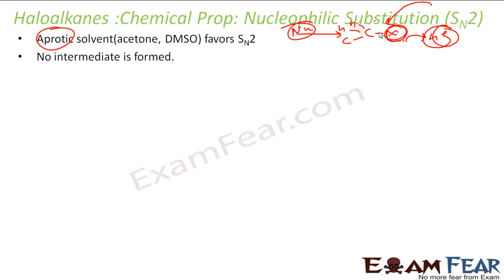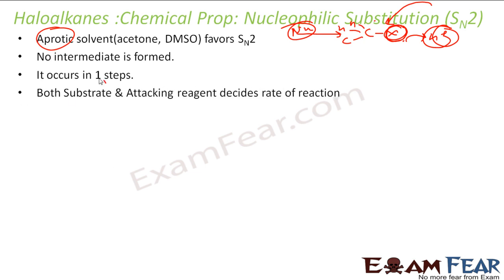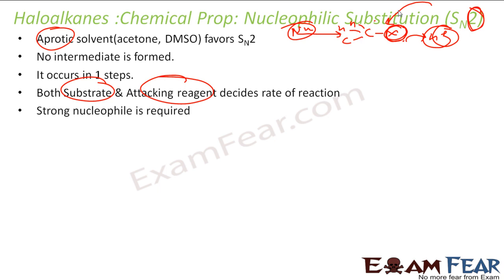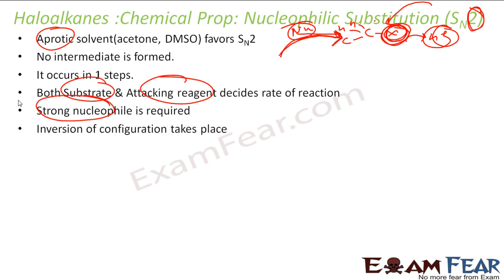In SN2 there is no intermediate formed — unlike SN1 where a carbocation intermediate forms. It is all a one-step process, and both the substrate and the attacking nucleophile decide the rate of reaction. A strong nucleophile is required because the nucleophile must be strong enough to attack and kick the leaving group out. Inversion of configuration takes place because the attack is from the back side.